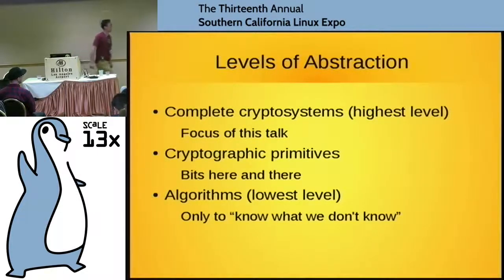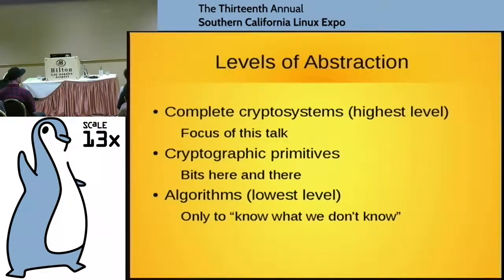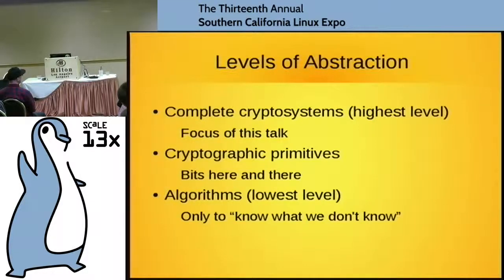So what can we do in 45 minutes? We can think about crypto at about three levels of abstraction. First we have algorithms, which you're writing algorithms, you're trying to break them, implement them. We can't do anything at that level except I'm going to try to do a little bit about the fact that most of us programmers don't really know what we don't know.